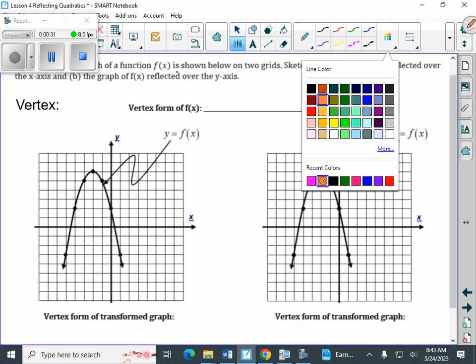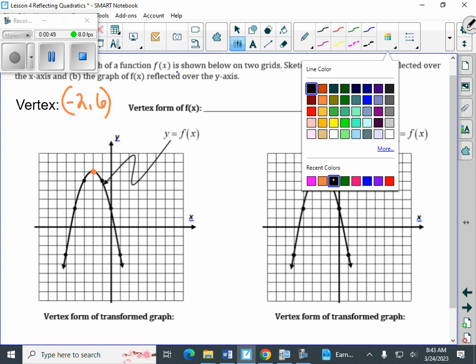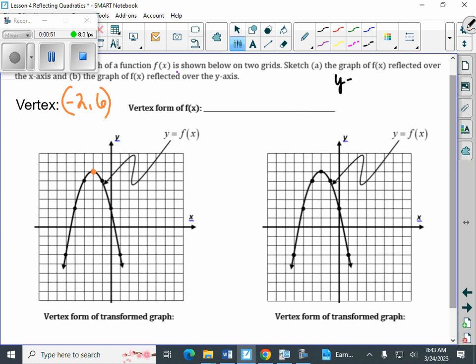And what we need to recognize is our vertex is negative 2, 6. And we want to write the vertex form of this. Just a reminder that the vertex form is y equals a times x minus h squared plus k.